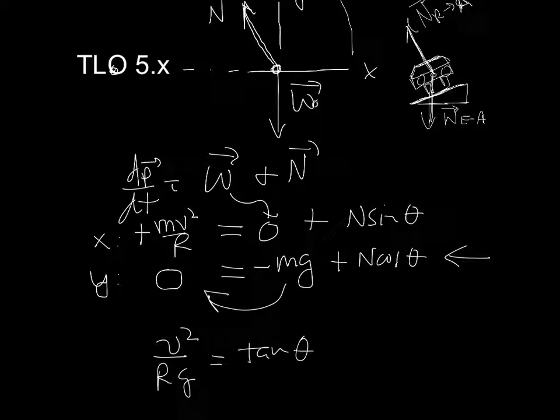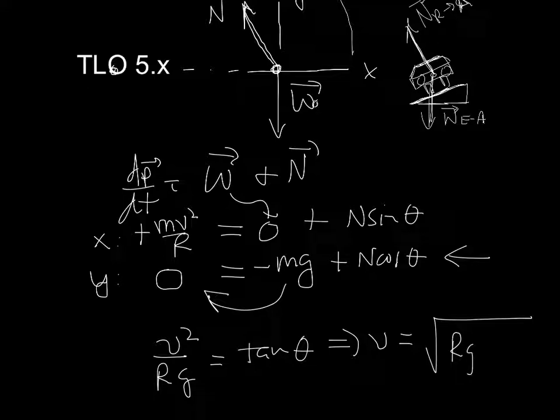So, we could solve for the speed, the design speed of the road. We could solve for the radius of the circle. You need to get a certain speed at a given angle, and so on. So, if I were going to solve this for the design speed, it would end up being the square root of rg tan theta. So, you tell me the size of the circle, you tell me the speed you want, then I could work out the angle, or you tell me the angle, I could work out the speed, and so on.